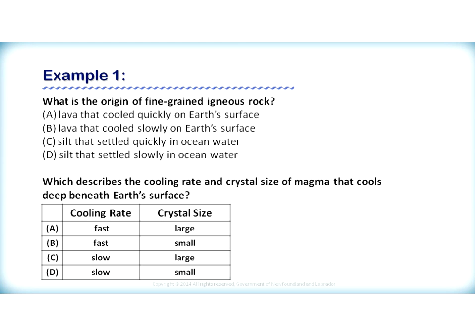Let's look at some examples of questions from past public exams. Example number one: what is the origin of fine-grained igneous rock? The key term here is fine-grained. If the igneous rock is fine-grained, that means it must have cooled quickly — it did not give the crystals time to grow. Therefore, if it cooled quickly, it must have cooled at Earth's surface, and lava is found upon Earth's surface. The answer is A: lava that cooled quickly on Earth's surface.